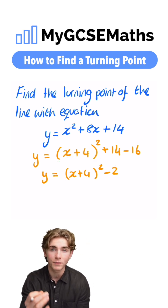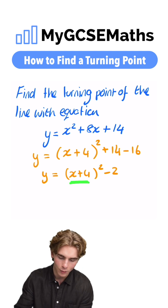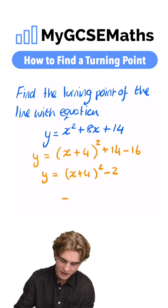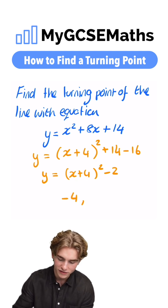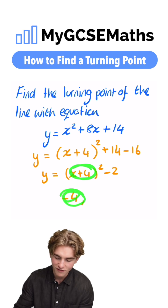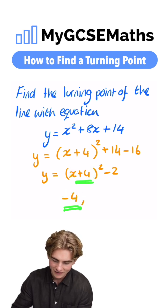To find the x-coordinate of the turning point, we're going to look at the number inside the brackets, and we're going to reverse the sign. So here it's going to be negative 4. If this number was negative, then this would be positive. Because this is positive 4, we swap the sign, we get negative 4.